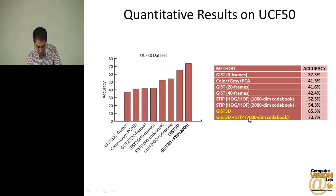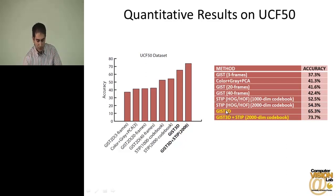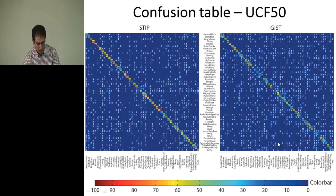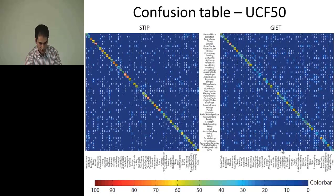On the UCF50 dataset, our descriptor achieved 65.3% accuracy. GIST, which has no motion information, achieved only 37% in the same configuration. STIP with a 2,000-dimensional codebook achieved 54.3%. We also combined our descriptor with STIP using late fusion and got even better performance, 8% more. Our confusion tables look better than those of STIP and GIST.